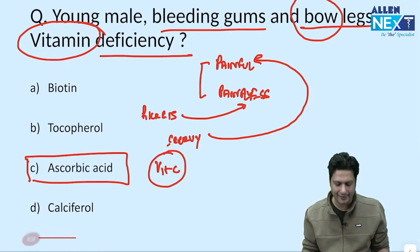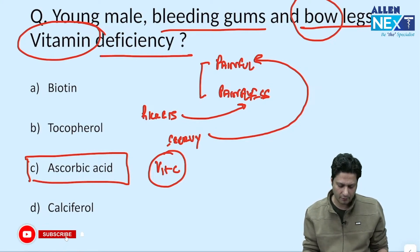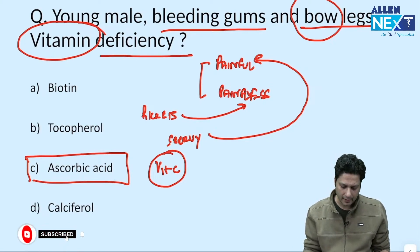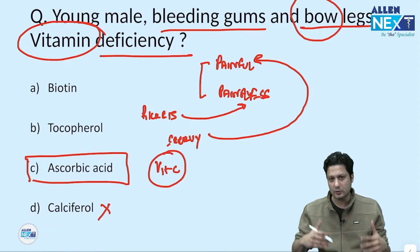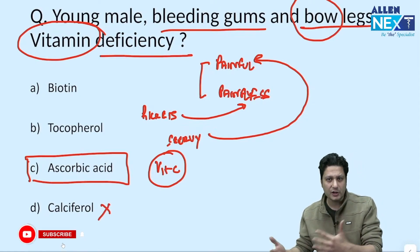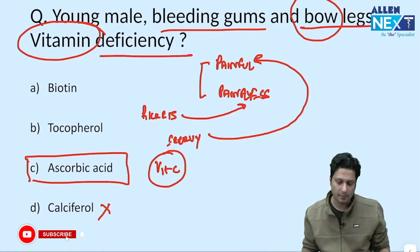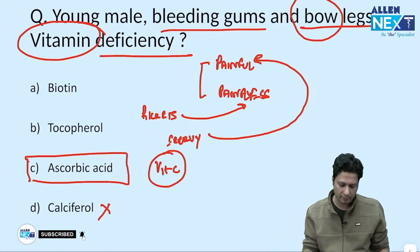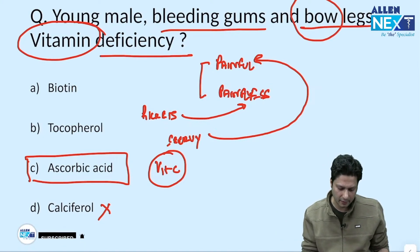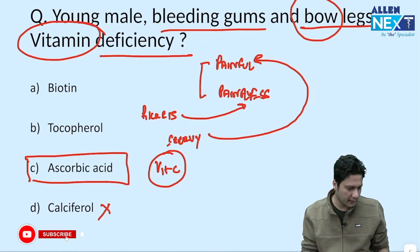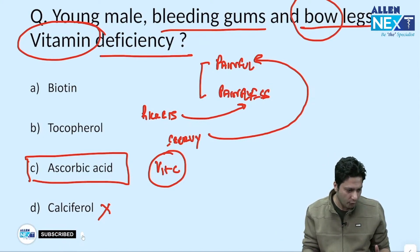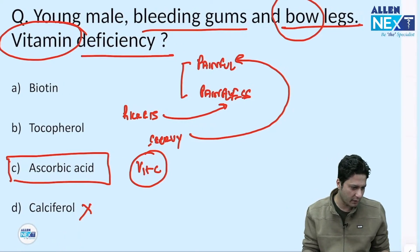The answer is ascorbic acid. Calciferol — vitamin D deficiency — is obviously not the answer because we are dealing with scurvy, not rickets. Hopefully you got the answer right, and as confirmed, this question was indeed present in the examination.